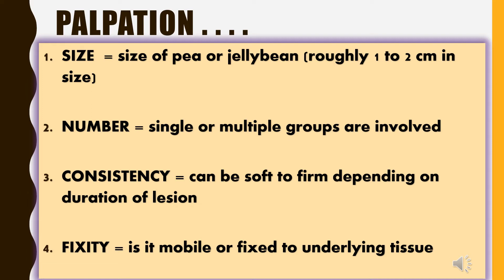Firstly, we will look into the size of an enlarged limb node, which can be the size of a pea or the size of a jellybin, roughly 1 to 2 cm in size.